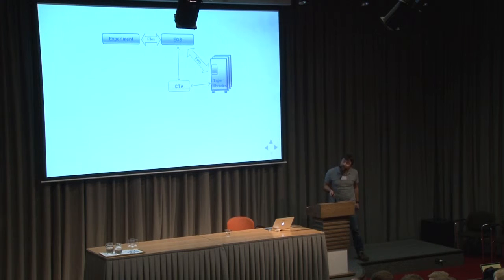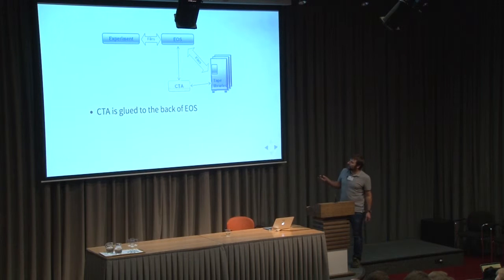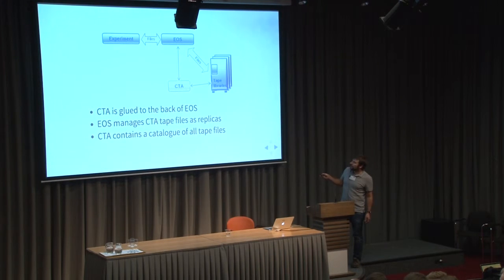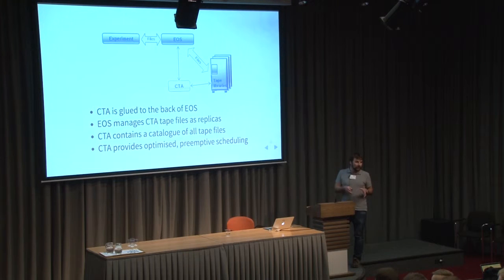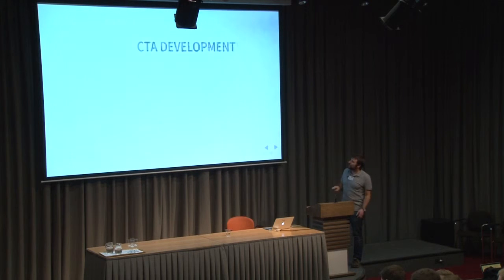That's basically how it looks. Experiments interact just with EOS, and on the back of EOS we're gluing CTA. EOS manages CTA files as replicas, and CTA contains a catalog of whatever went from EOS to tapes and can be retrieved. It just makes sure we're optimizing the way we're moving data from and to tapes, because tapes are slightly different than disks in terms of access.